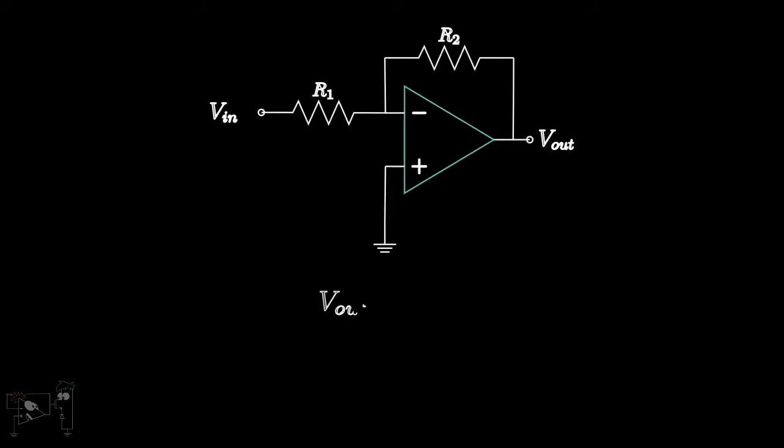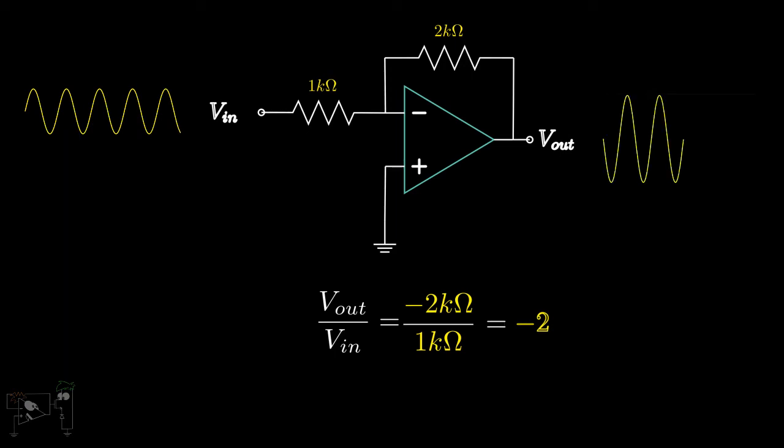So, suppose we have an inverting amplifier with R2 equal to 2 kilo-ohms and R1 equal to 1 kilo-ohm. Then, the magnitude of gain of the op-amp will be 2. If we feed a sinusoidal input to this circuit, we will get an inverted sinusoid at the output with twice the amplitude. In this way, we achieve amplification using an op-amp.